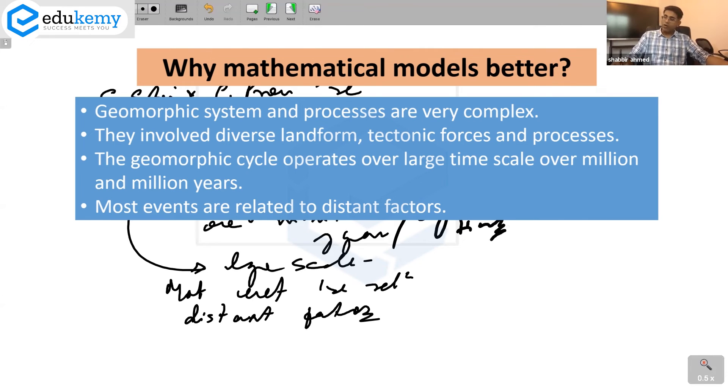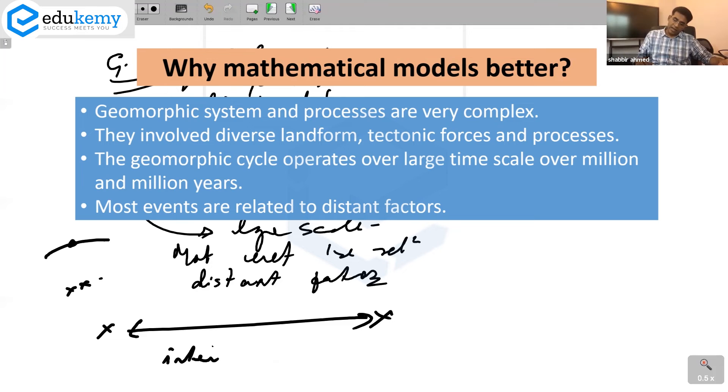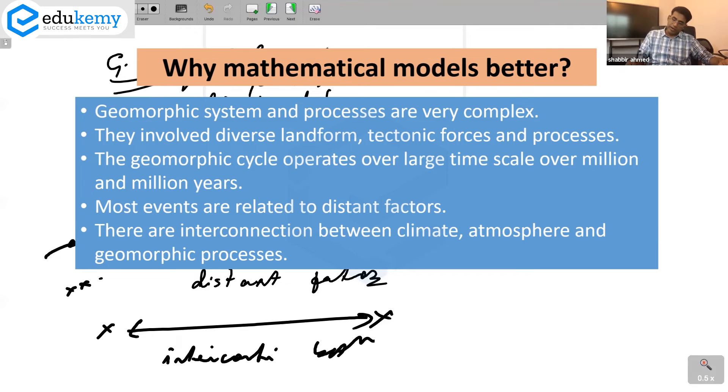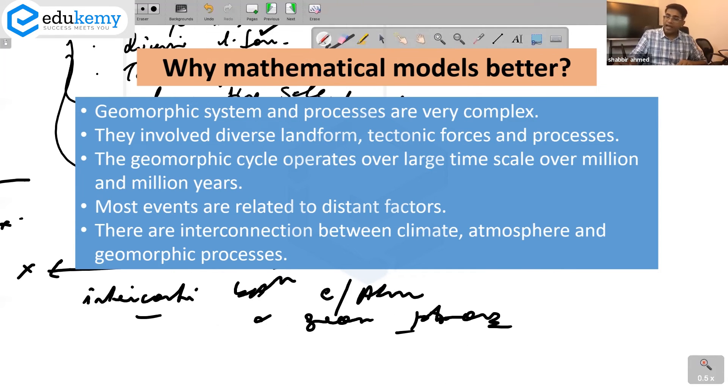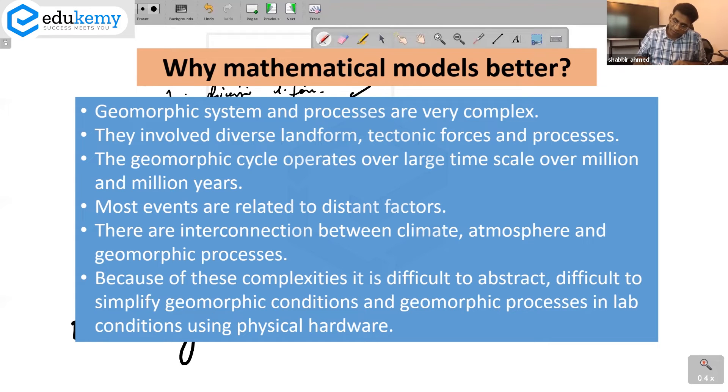Most events are related to distant factors, cyclic times, over large time scale. They involve events that are relatively very distinct factors. What happens in India may be related to what's happening in Europe - look at the scale of the location involved. What's happening on the surface is linked to what's happening in the mantle, thousands of kilometers inside. There are interconnections between climate, atmosphere and geomorphic processes.